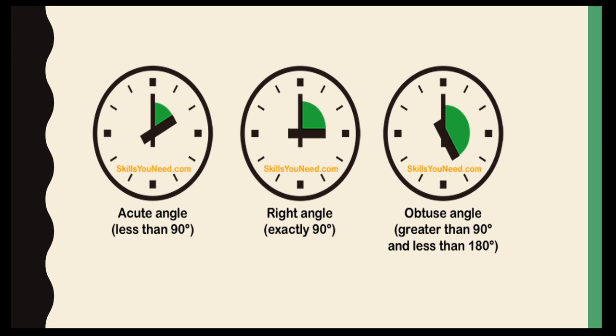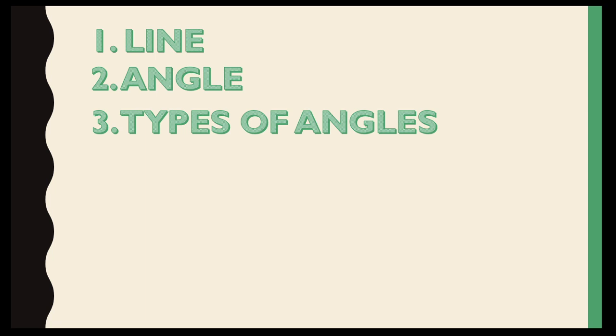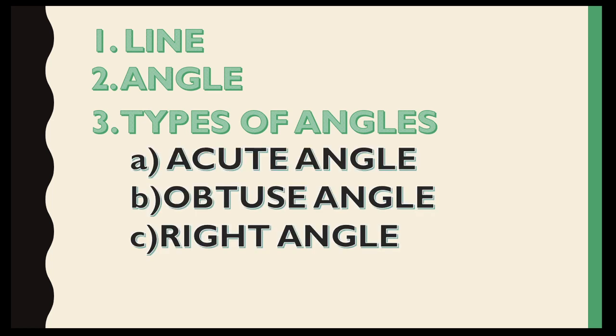In third clock, here both hands have less than 90 degrees - no, it is greater than 90 degrees, so it will be obtuse angle. So we have discussed about line, it was a quick revision of line. We have discussed about angle, types of angles - and what were the types of angles? Acute, obtuse, and right. Yes, you identified it right.